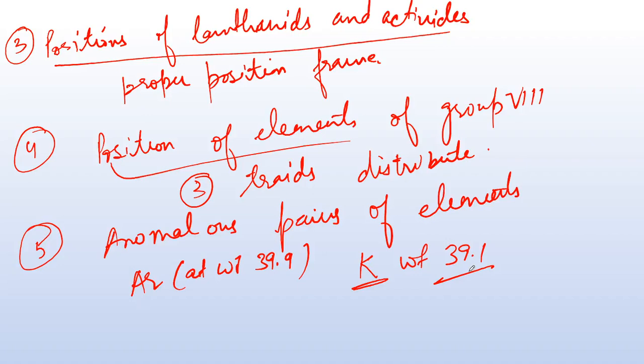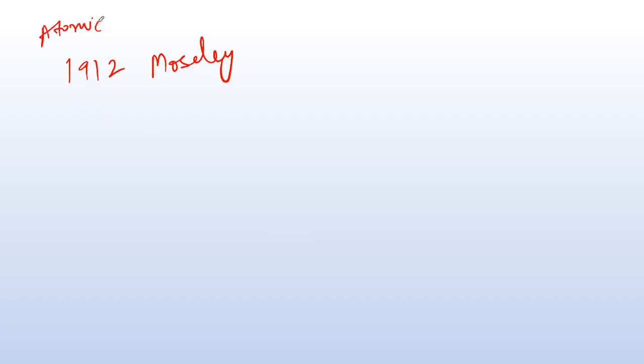The fifth defect is anomalous pairs of elements. There are elements whose higher atomic weight preceded elements with a lower atomic weight. For example, Argon's atomic weight is 39.9, but it precedes Potassium, whose atomic weight is 39.1. This violated the principle of arranging elements in order of increasing atomic weight.